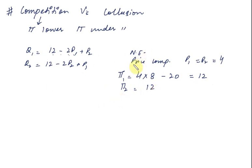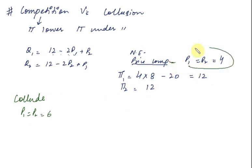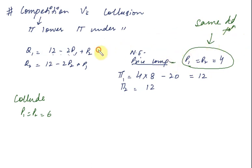So the profit firm 1 is earning is 12, and by similar logic the profit of the second firm is also 12. This is under price competition. On the contrary, when they collude, the price they end up charging is 6. One difference I want to point out: in price competition, the price came out the same because the demand functions are similar. If demand functions were different, they would not charge the same price — this is a coincidence.